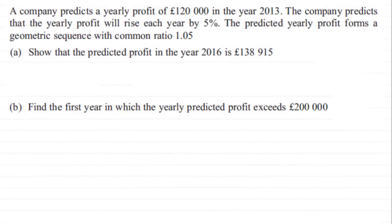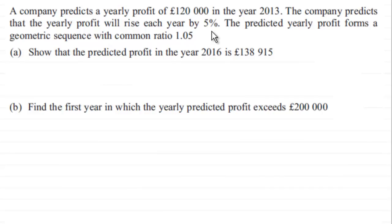Here we have an example on using the geometric progression. Just give you a moment to pause the video, come back and check your work against mine. The question is that a company predicts a yearly profit of £120,000 in the year 2013, and predicts that the yearly profit will rise each year by five percent, forming a geometric sequence with common ratio 1.05.